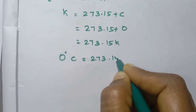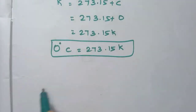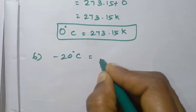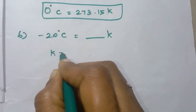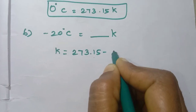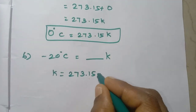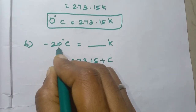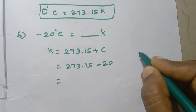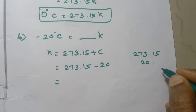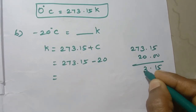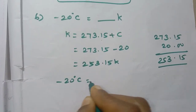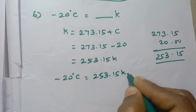Fifth sum answer is 273.15 Kelvin. Then sixth sum: minus 20 degrees Celsius equals how many Kelvin? Using the formula K equals 273.15 plus C, substituting C equals minus 20: 273.15 minus 20 equals 253.15 Kelvin. So minus 20 degrees Celsius equals 253.15 Kelvin.